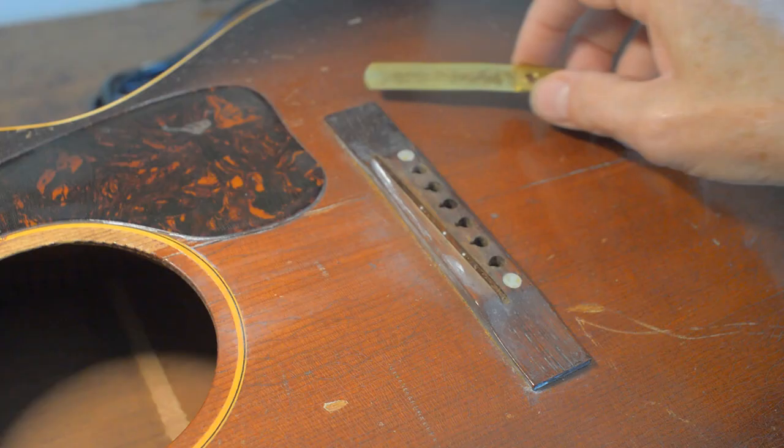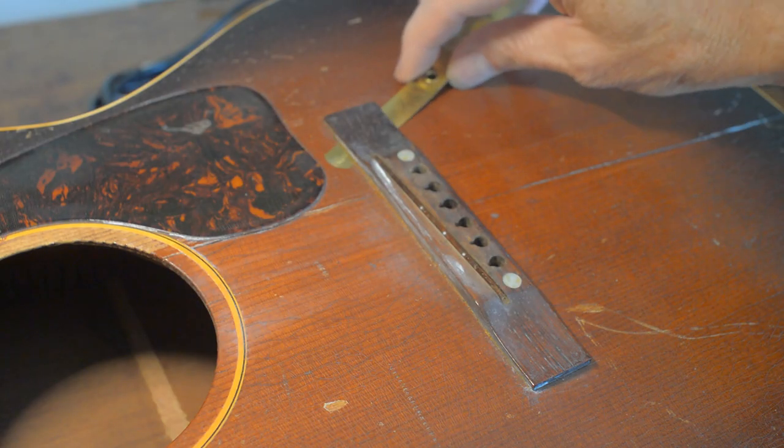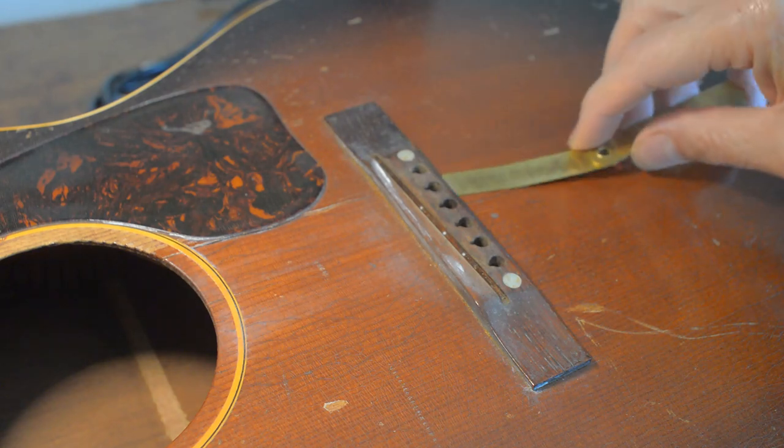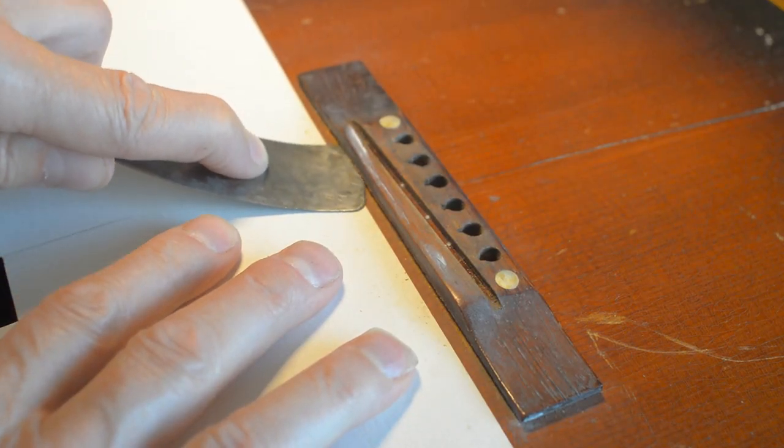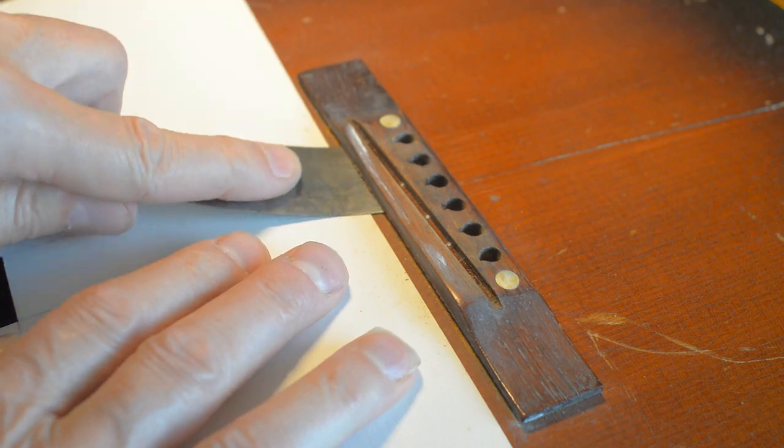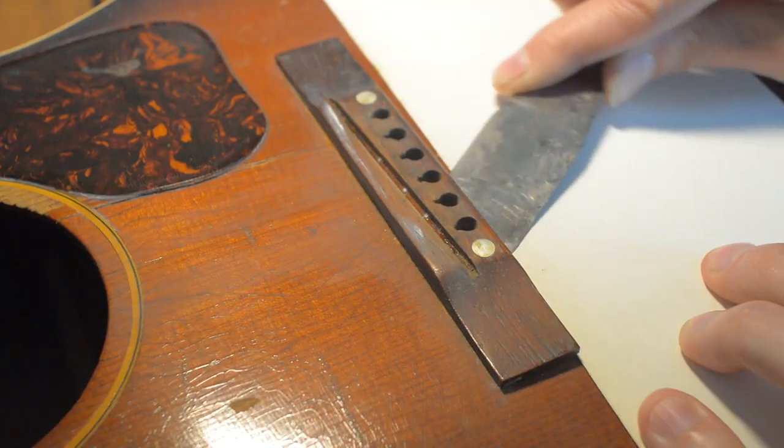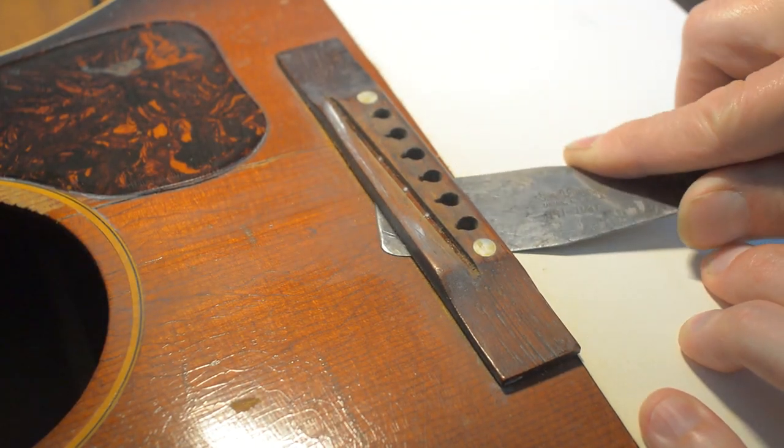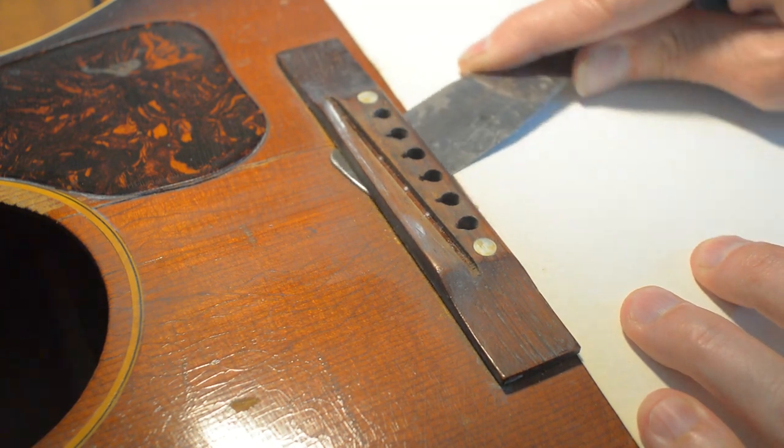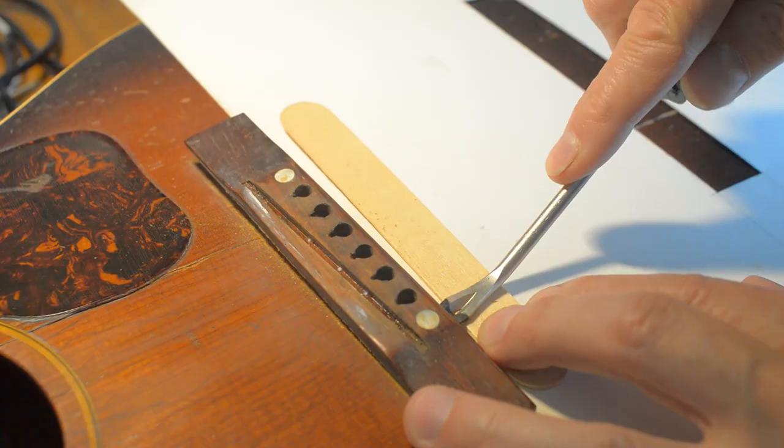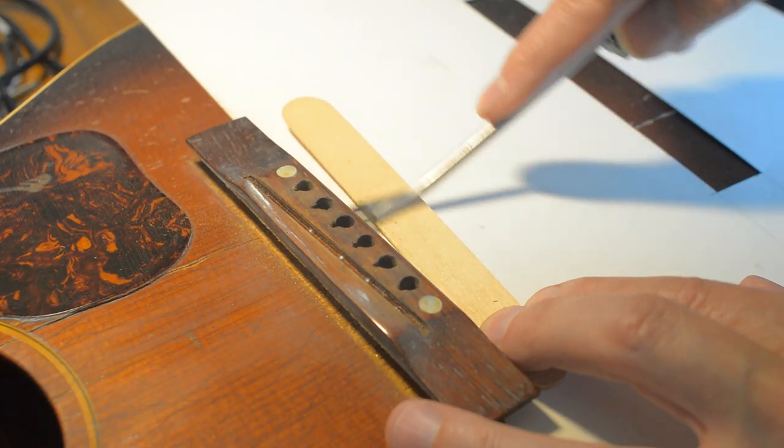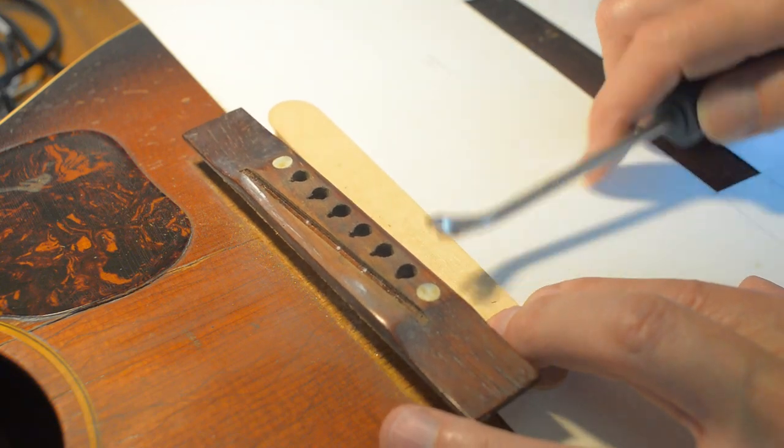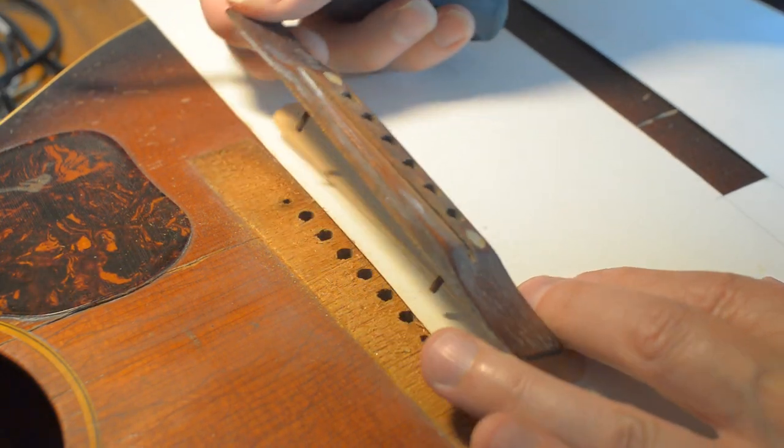Oh no! Insects were living inside here. This bridge is so loose that I won't even need heat to take it off. Make sure it's loose all the way around, and then a little prying, and off it comes.